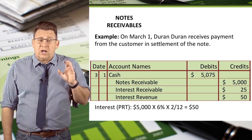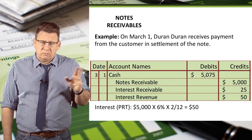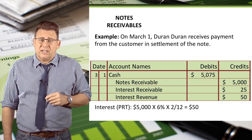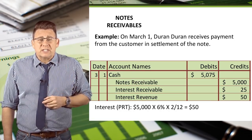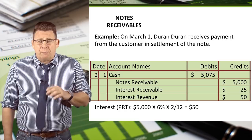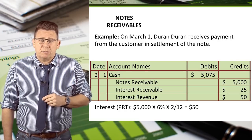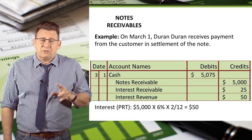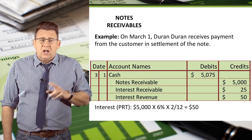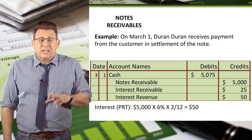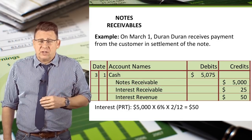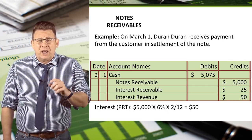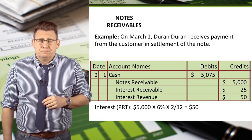Finally, the collection of the note on March 1 is a lengthy journal entry, but we can work through it. Cash is still debited for $5,075, which is the principal plus the interest collected. Notes receivable is still credited for $5,000 because that account balance needs to be zero after the customer pays it off. Interest receivable, which has a $25 debit balance from the December 31 adjusting entry, also needs to be credited for $25. Finally, interest revenue is credited for $50 because that's the amount of interest earned in the new year.